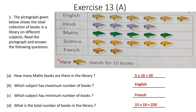Why do they give this statement that 1 book stands for 10 books? Because they can't fit all the actual books in the picture. For example, maths has 50 books — they can't fit 50 book images in the picture. That is why they give us this clue so we can multiply accordingly. The total number of books in the library is 220.